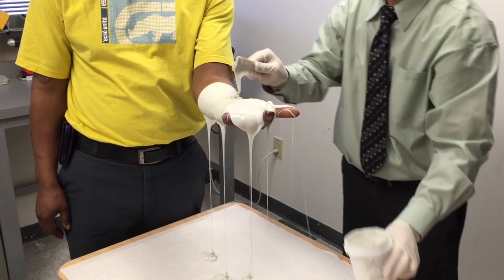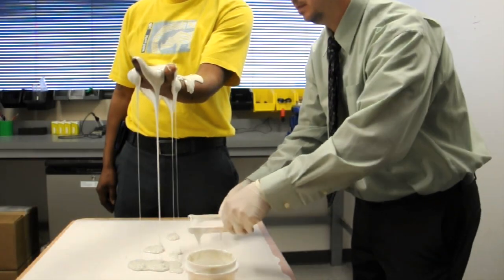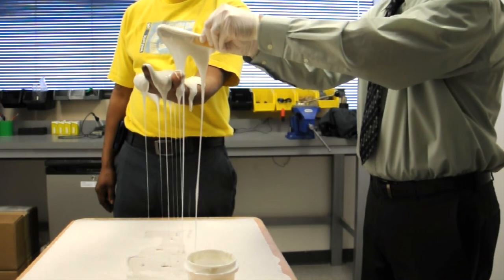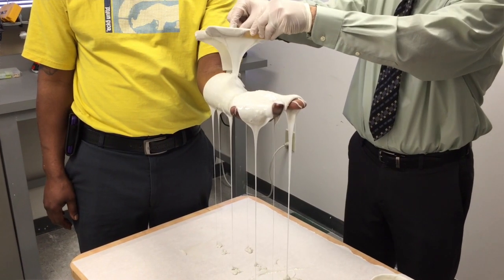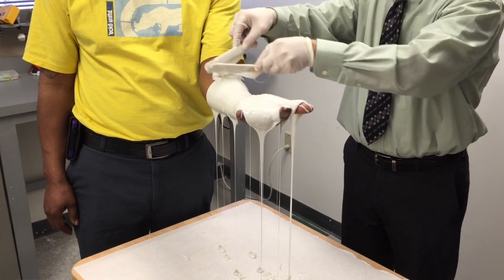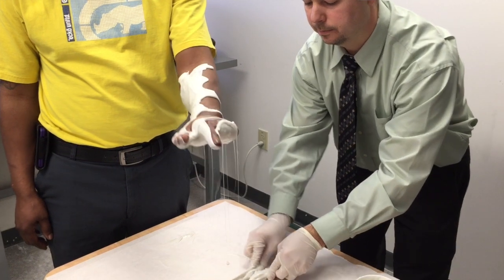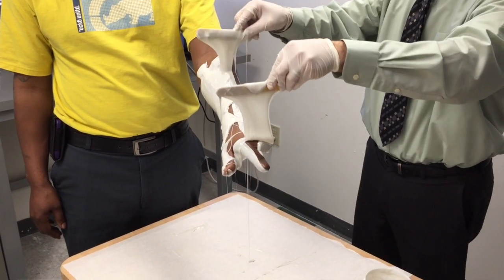This is where I use the two tongue depressors to reapply the silicone. I'll put them flat on the table, push them together, scoop up some silicone, and then spread the tongue depressors apart over top of the individual's limb and let the silicone flow out from the two tongue depressors to recoat the surface.